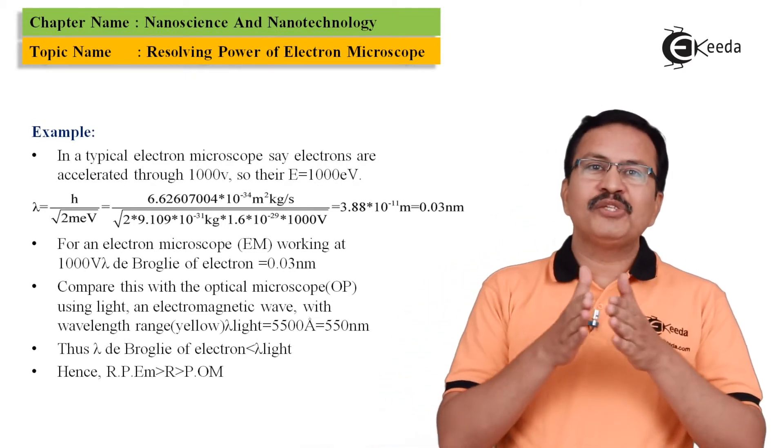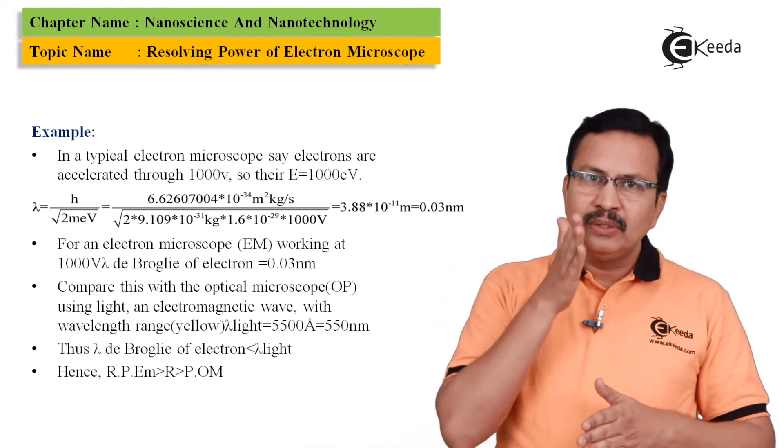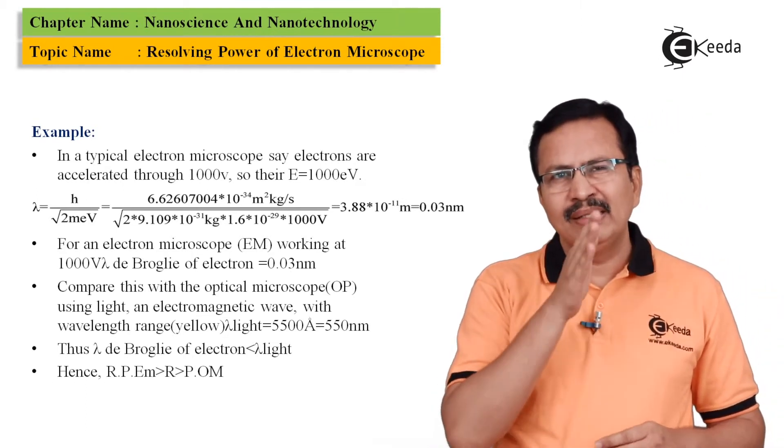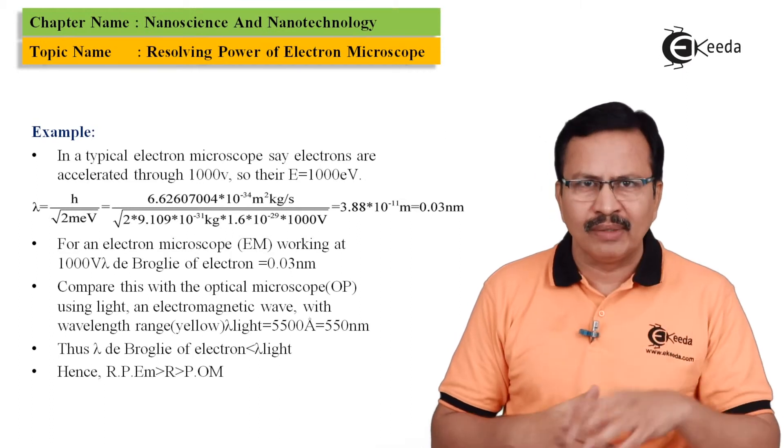Now, light, as you know, has a big span of wavelengths. Now, let us focus only on one wavelength which comes normally in the middle range and that is nothing but the yellow wavelength.